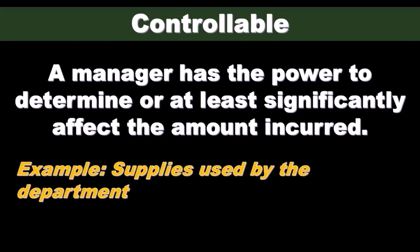Even if a cost is assigned to a specific area or division, or is used by that division, if the department manager within the division doesn't have control over it, then we don't want to use it as a performance measure for that particular manager. We'll use it for other types of decision-making purposes for that particular unit or segment, but when evaluating the performance of a manager, we only want to include those costs which are controllable.